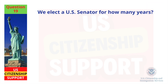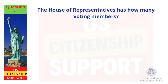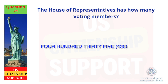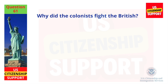We elect a U.S. Senator for how many years? Six. The House of Representatives has how many voting members? Four hundred thirty-five. Why did the colonists fight the British? Because of high taxes.